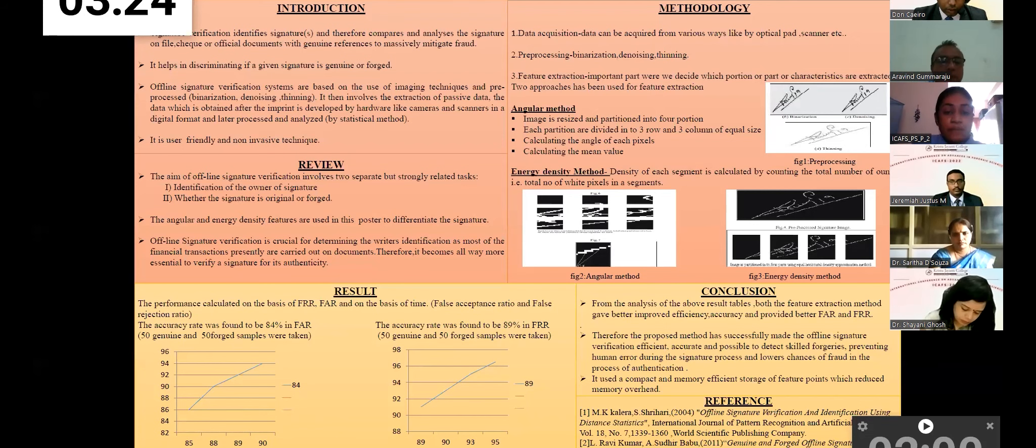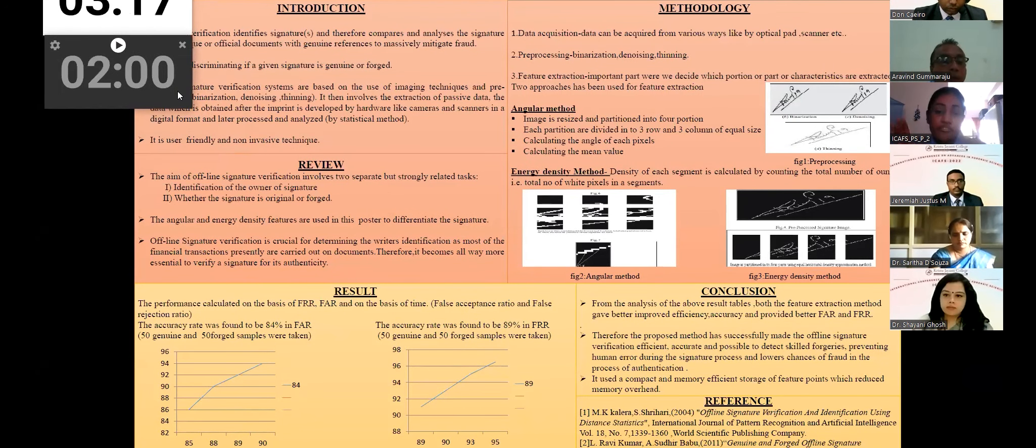So what is the methodology? It includes the data acquisition first method, where the data for the verification is acquired from various sources like optical pads and scanners. The next step includes pre-processing. That is before processing the image for feature extraction, some pre-processing algorithms like binarization, denoising and thinning are applied here. What is binarization? It is conversion of a multi-tonal image to a bi-tonal image like a grayscale image. We convert it into black and white. Next is denoising. It is the task of removing noise from an image. It restores the true image. Noise removal also obtains a high quality image here. Thinning is done so that the thin image requires less storage compared to the original image.